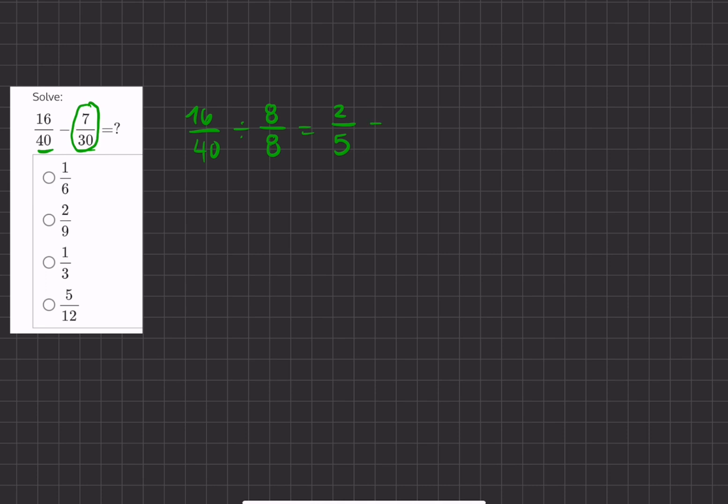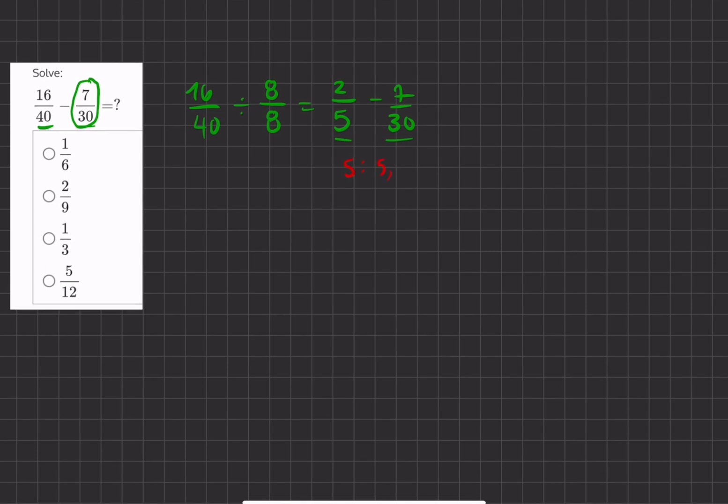Now we have to subtract 2 fifths by 7 over 30, but they still don't have a common denominator. We know that if we list out the multiples of 5, we have 5, 10, 15, 20, 25, and 30.